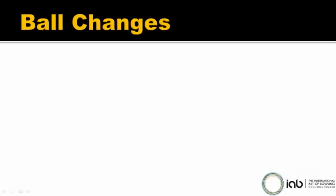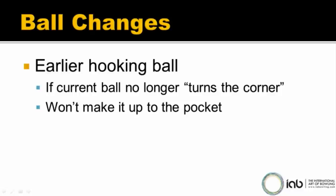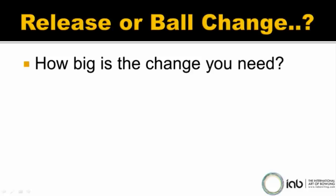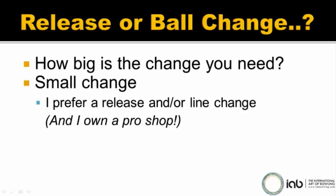Ball changes are another tool in your arsenal. An earlier hooking ball is very handy if your current ball won't make it to the pocket and won't turn the corner anymore. Likewise, if the lanes are hooking like crazy, or your ball is burning up and won't carry anymore, sometimes a later hooking ball can be the answer — a later hooking ball will stay straighter and let you hold the pocket better. So the question is, do you make a release change or a ball change? The answer lies in how big a change you need. For a small change — say you've been hitting the pocket and you're starting to leave 10 pins or 4 pins — maybe you just need a little line change or release change. For small changes, I prefer a release or line change. And this is coming from a guy who owns a pro shop — I benefit from selling bowling balls, so believe me, I have nothing to gain.